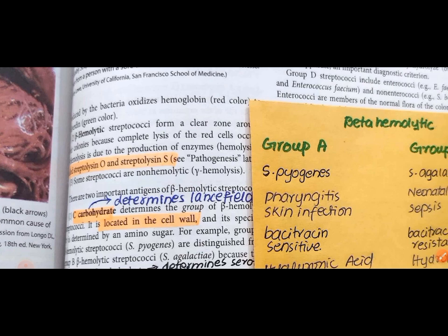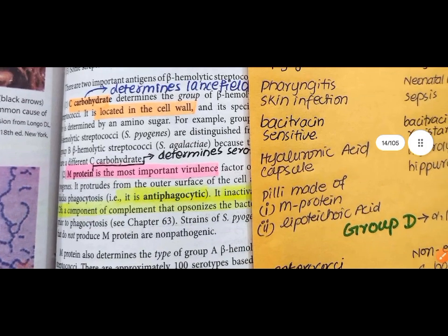Beta hemolytic bacteria cause complete RBC lysis, while gamma hemolytic organisms are non-hemolytic. There are two important antigens in beta hemolytic streptococcus: C carbohydrates, located in the cell wall, which determine the Lancefield group specificity based on amino sugar composition. Group A S. pyogenes is distinguished from Group B S. agalactiae based on their C carbohydrates.